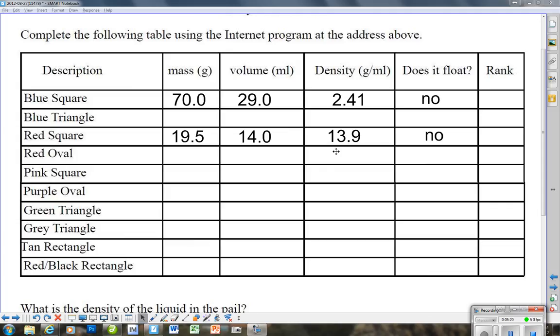Now I'm going to stop here, but you're going to do all 10. You're going to be filling in the blue triangle, the red oval, the pink square, the purple oval and so on all the way down. When you're done you're going to rank these from smallest to largest, and you're ranking by the density.